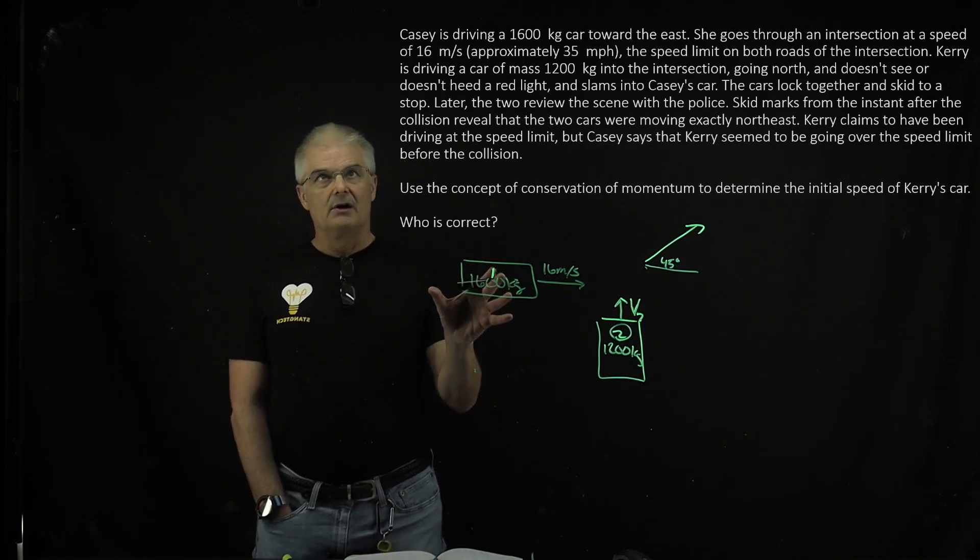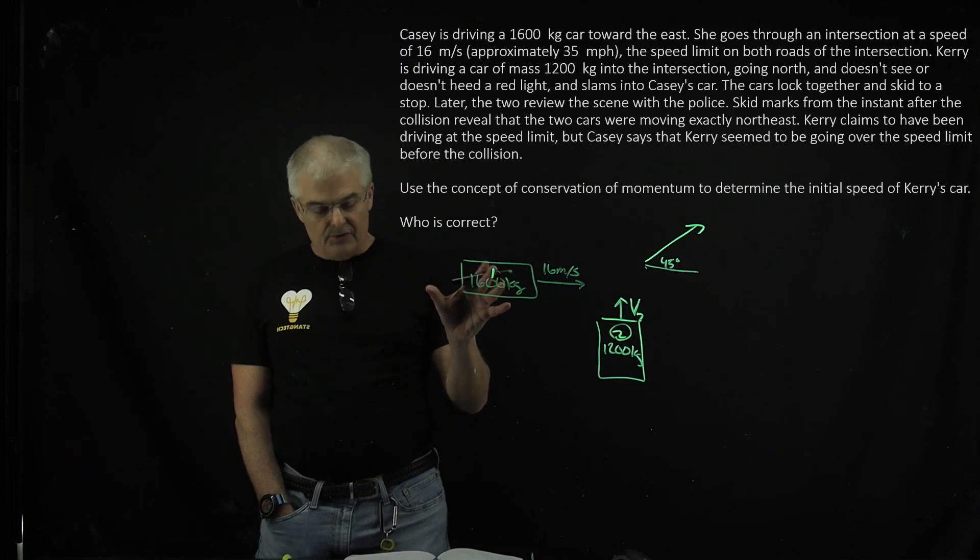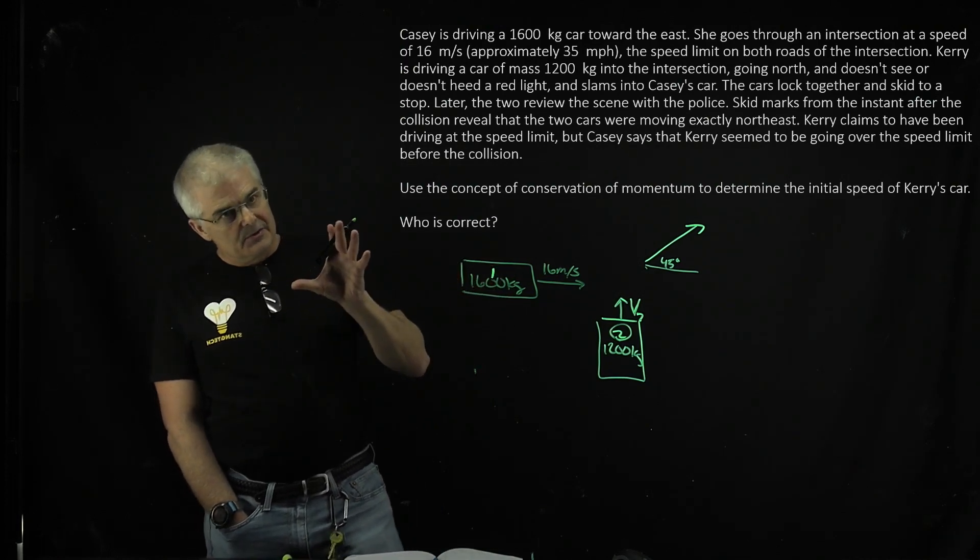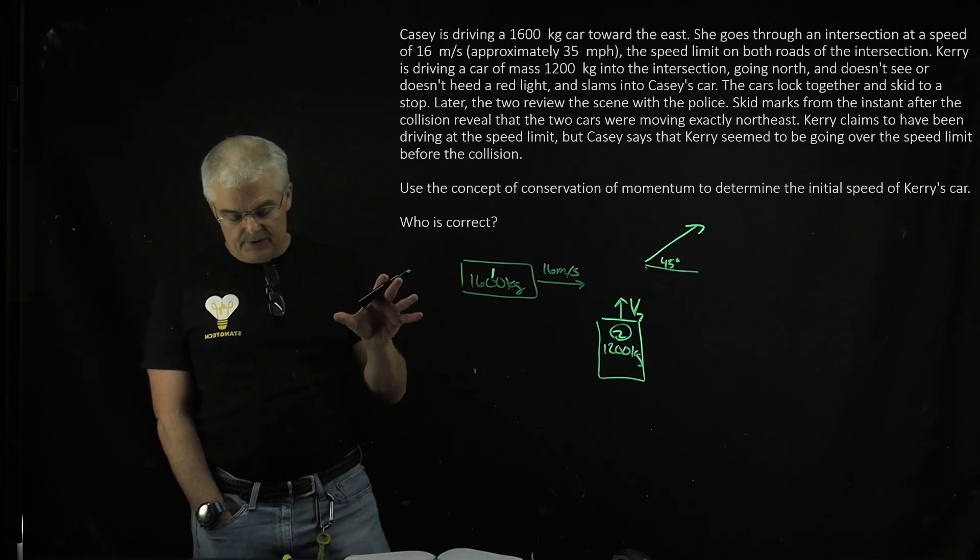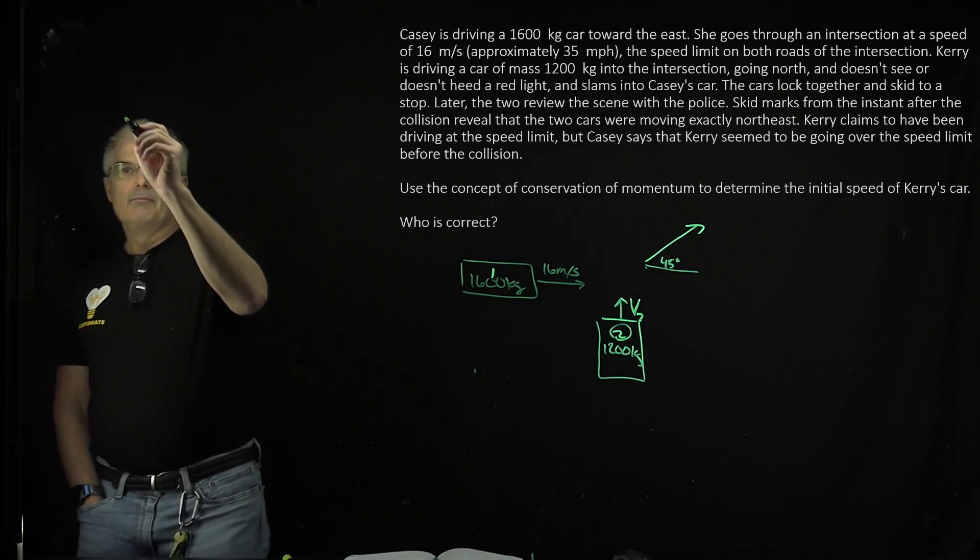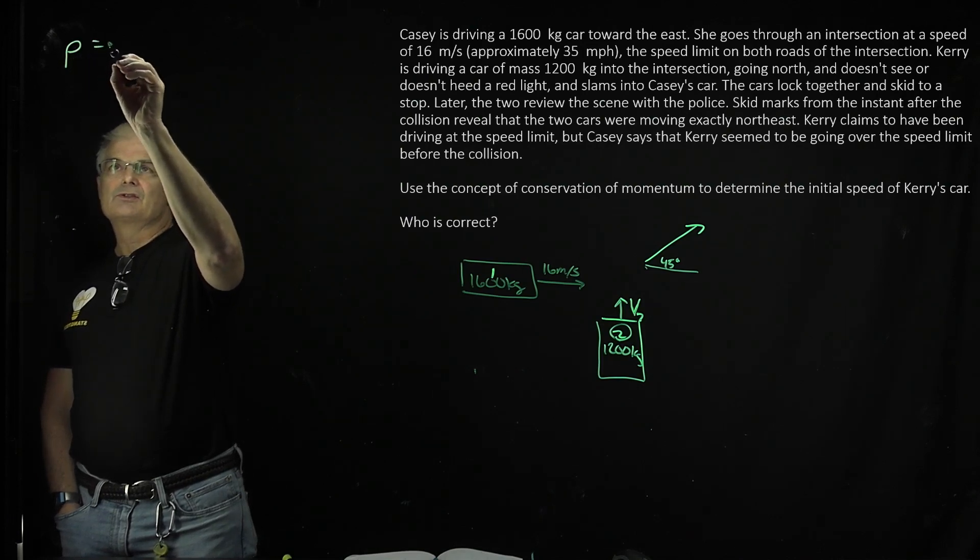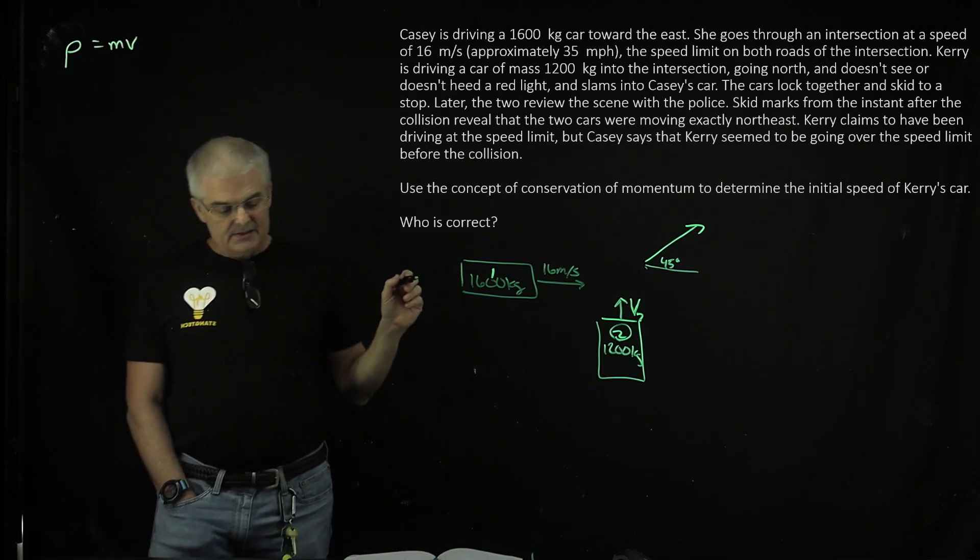So what goes on is that, remember, this is using the law of conservation of momentum. So the momentum has to be conserved, but you have to break it down into the X and the Y components. And so momentum, if you recall, is this funny looking P and that's just equal to MV.